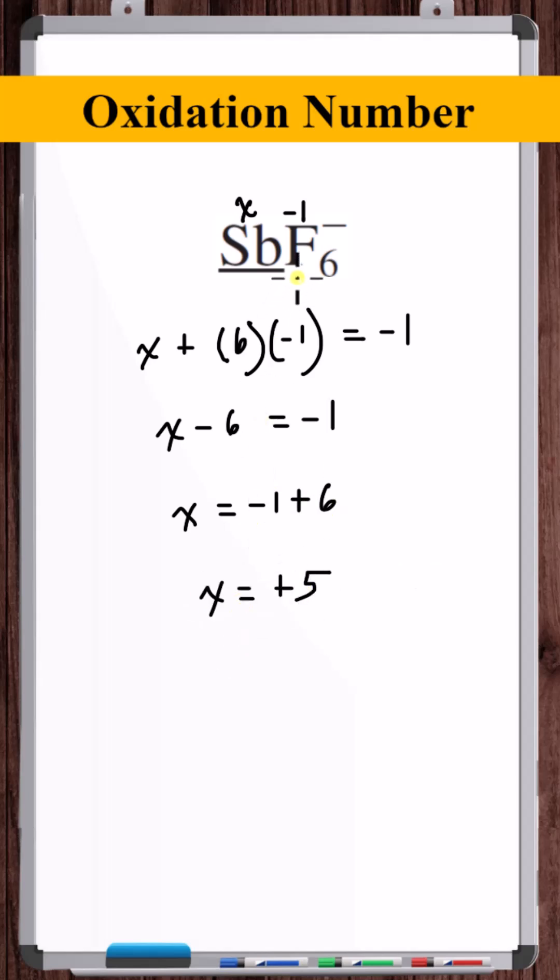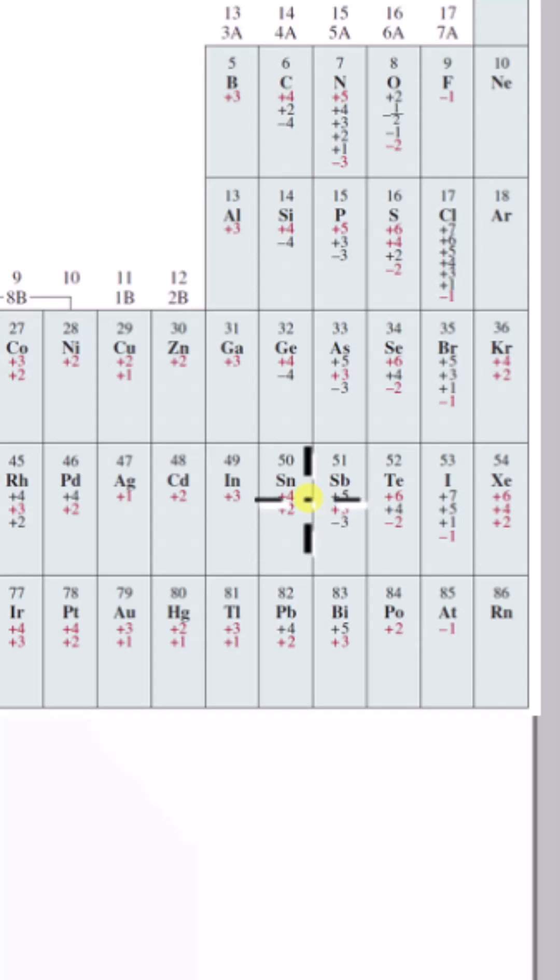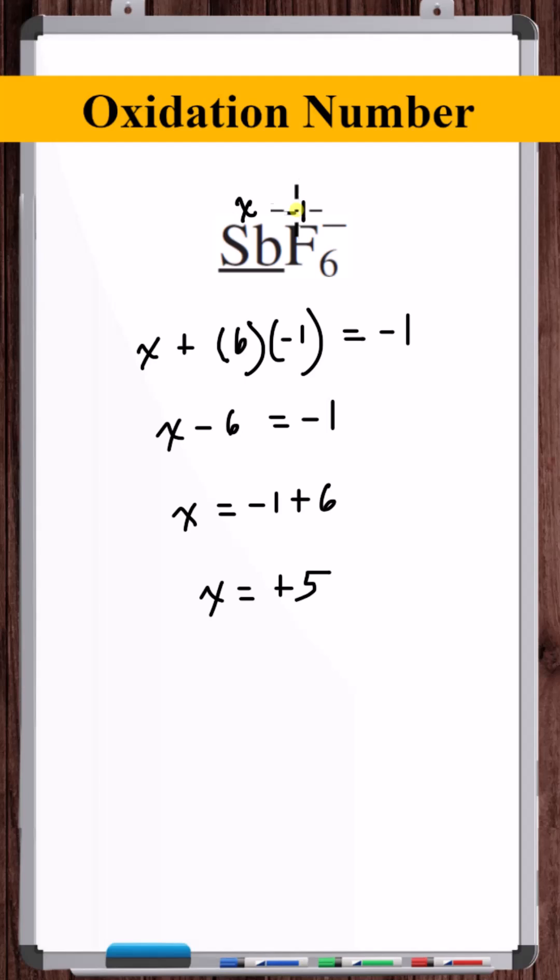Because fluorine must have an oxidation number of -1 in all of its compounds, this must be the oxidation number of the antimony no matter what. However, we can still check the oxidation number chart and see that +5 is a listed oxidation number for antimony. But again, it wouldn't matter what's listed. The -1 on the fluorine would force any oxidation number on the antimony. So the oxidation number of antimony is +5.